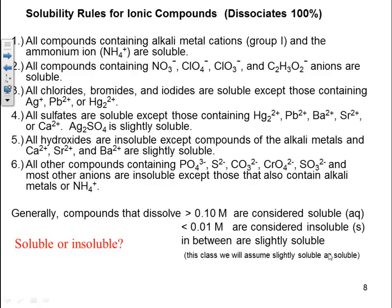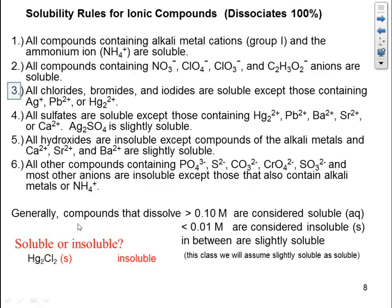Let's look at the rules and see if we can apply them. Mercurous chloride — soluble or insoluble? Looking at the rules, it says all chlorides are soluble with some exceptions, and this is one of those exceptions. So we say it is insoluble based on rule number three. Potassium iodide — based on rule one, all alkali metals are soluble, and rule three, all iodides are soluble with some exceptions, and this is not one of them. So we put AQ behind it because it's soluble based on rules one and three.